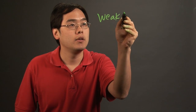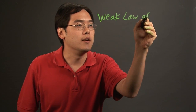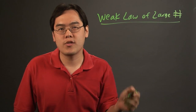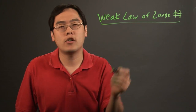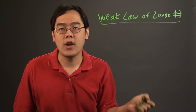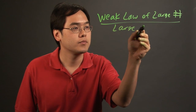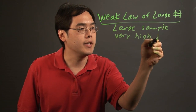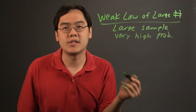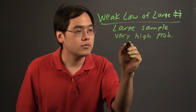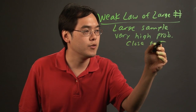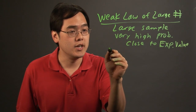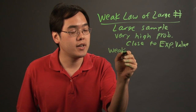Now the weak law of large numbers is actually a lot stronger than the name entails. What the weak law of large numbers says is if you have a large sample, there's a very high probability that the sample will be close to the expected value. This is related to what's known as weak convergence.